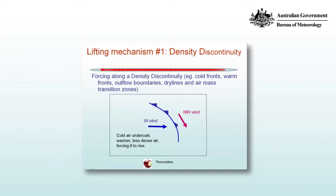This also occurs for warm fronts and outflow boundaries from thunderstorms, which we'll see in a movie loop a little bit later on, and things like dry lines, which are associated with troughs of low pressure. For example, in central New South Wales and Queensland and into northern Victoria during the summer, troughs form — they're an axis of minimum surface pressure but also represent a density discontinuity, with warm moist air on one side and hot dry air on the other. So again, the difference in density isn't simply due to temperature differences but also due to moisture.